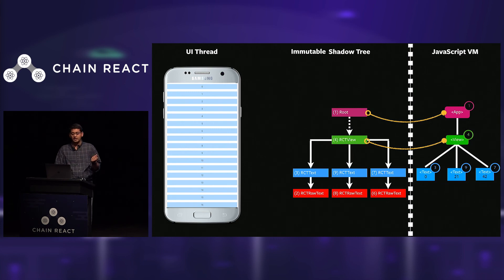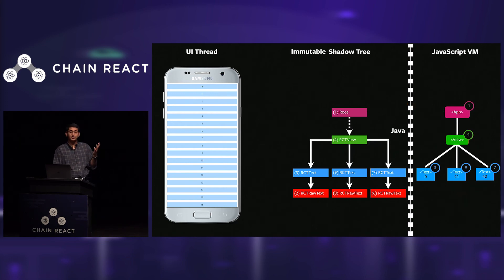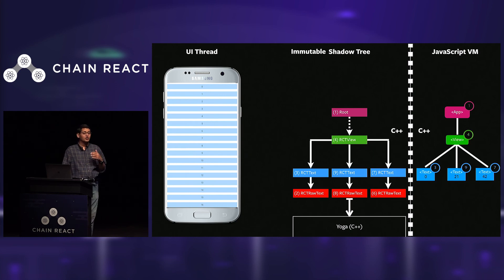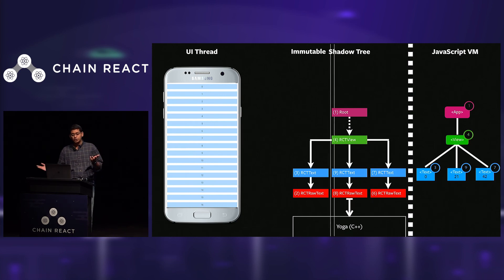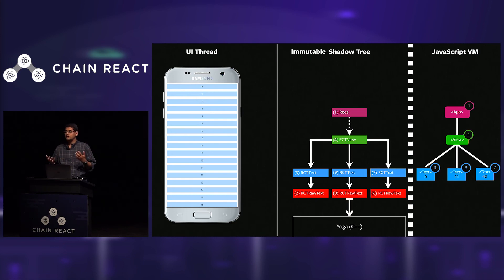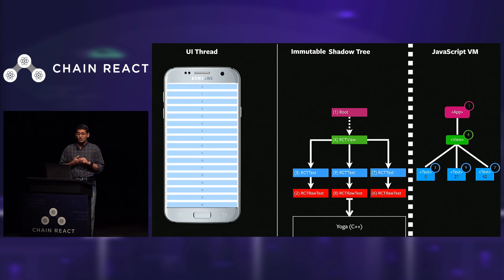The shadow tree itself is currently written in Java, the JavaScript VM runs using C++, and Yoga is also written in C++. We weren't happy about these language boundaries, so why not convert the shadow tree to C++ as well? This pushes the language boundary as close to the UI as possible. Now that all three — the JavaScript VM, Yoga, and the shadow tree — are in C++ talking to each other, it's much easier to share data structures and nodes across all three systems. This is basically what the new architecture of React Native would look like, and none of the user-land code should ideally change.